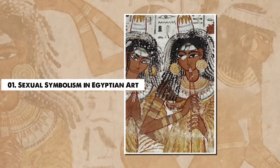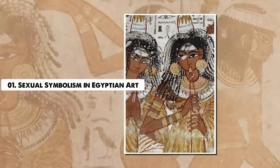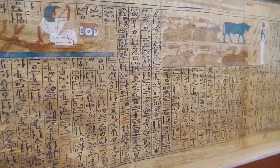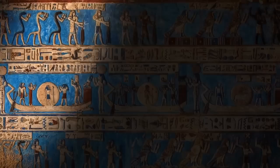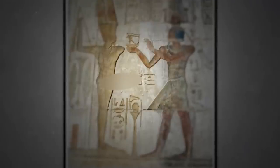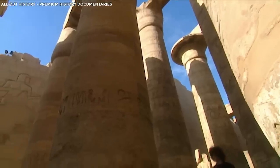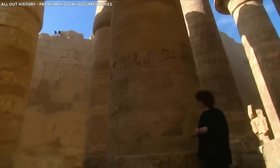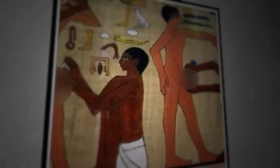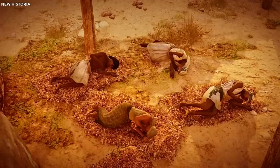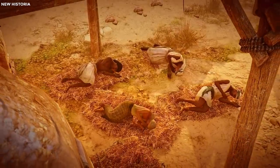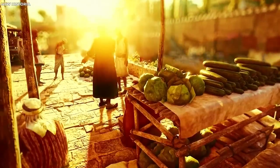1. Sexual Symbolism in Egyptian Art. Egyptian art is renowned for its extensive use of symbols to portray the underlying essence of life, death, and everything in between. Sex and sexuality are no exception, occupying a significant place in this rich tapestry of representation. In ancient Egypt, sexual symbolism was pervasive and often highly explicit, providing a unique lens through which we can understand their complex perceptions of life, fertility, and continuity.